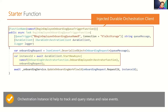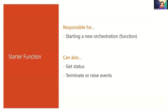The startup function is very scoped — only to kick off the actual orchestrator itself. The orchestrator will be the one actually performing the work, not the startup function. It's just like an ignition or trigger for the actual orchestrator. The startup function is responsible to create a new orchestration, and it can also get statuses, terminate, or raise events depending on the scenario.